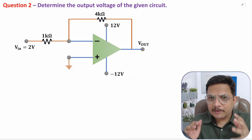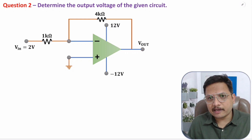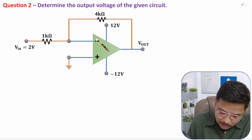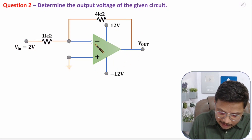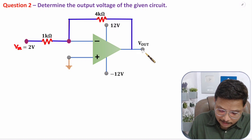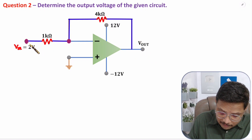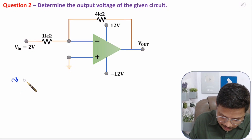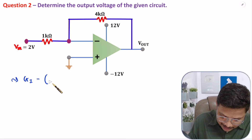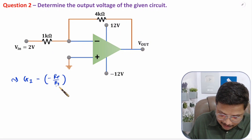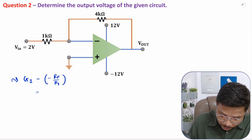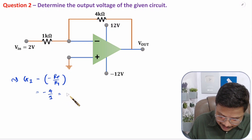In the second question, we will calculate the output voltage based on the circuit given. If you observe, we have negative feedback and input is given at the inverting terminal. We need to find the output voltage. With negative feedback and inverting configuration, the gain equation is minus RF by R1. Here RF is 4 and R1 is 1, so gain is minus 4.